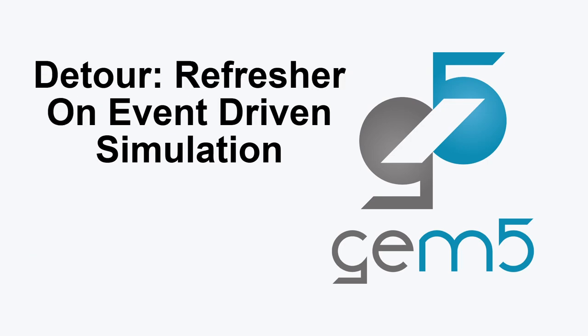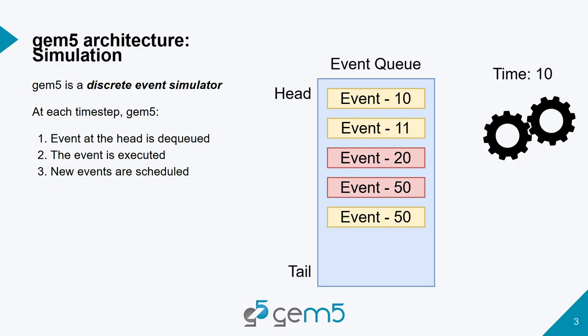Let's take a detour and go over the slides that Jason went through a few days ago. The way that Gem5 works is that there's a global event queue. The event queue is a priority queue — events are ordered based on the time that they are supposed to occur.